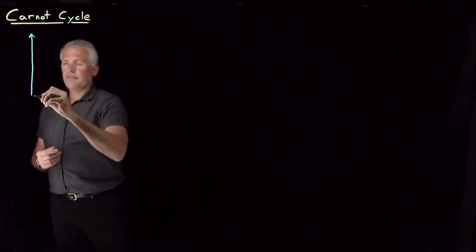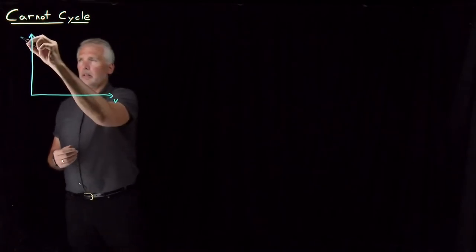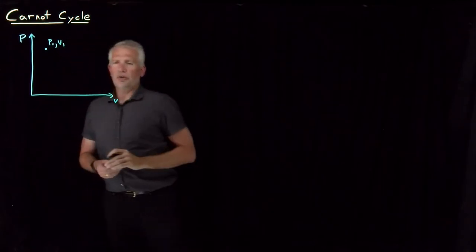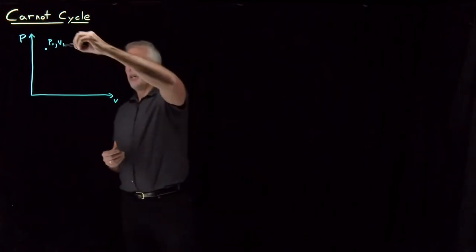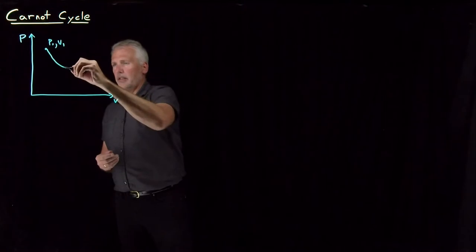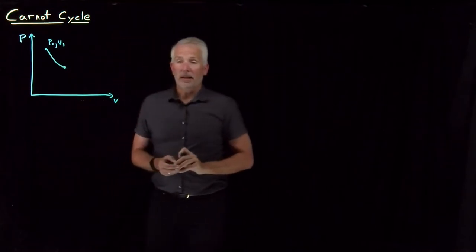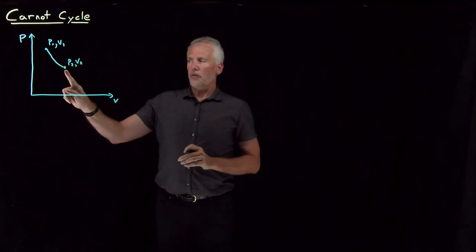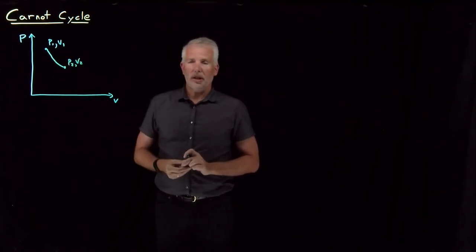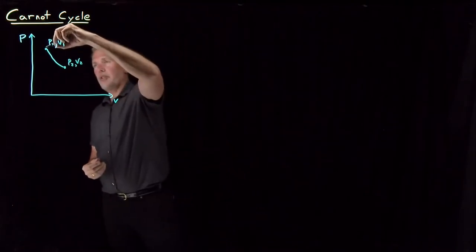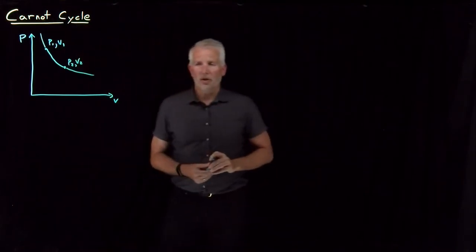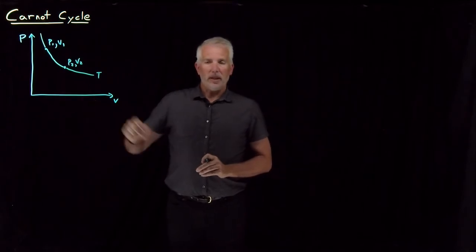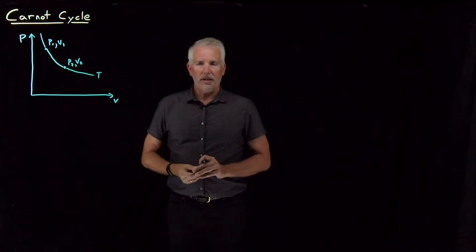Let's start with a pressure-volume diagram. We'll start with a gas at some initial pressure P1, V1. I'm going to let the gas expand to a higher volume — V2 is larger than V1 — so it expands to a larger volume and it's at a lower pressure. I'm doing that reversibly and isothermally. So there's an isotherm here; all the points on that curve are at the same temperature. I'm moving from one point on this isotherm to a different point on that isotherm. That's the first step in what's going to be a multiple-step process.